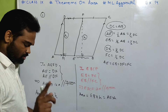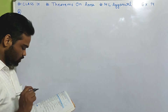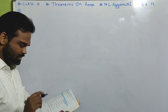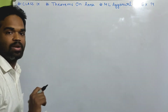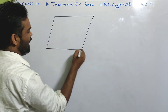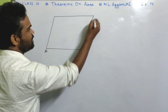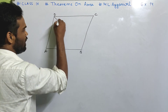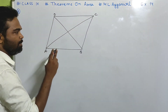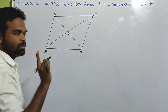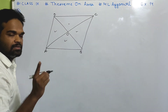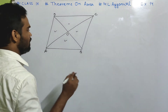Now we'll do number 2. Prove that the diagonals of a parallelogram divide it into four triangles of equal area. Suppose you have a parallelogram ABCD and the diagonals AC and BD intersect at O. Then we need to prove that the areas of these four triangles are equal.